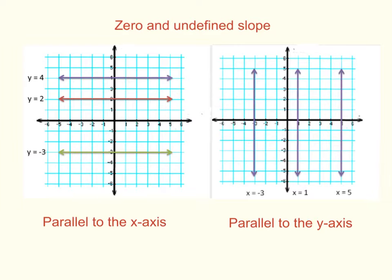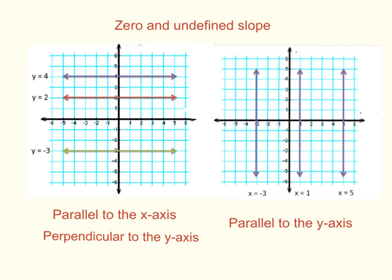So here we have our horizontal lines on the left, our vertical lines on the right. Our left ones are parallel to the x-axis, and our right ones are parallel to the y-axis. We notice that parallel to the x-axis is actually perpendicular to the y-axis.